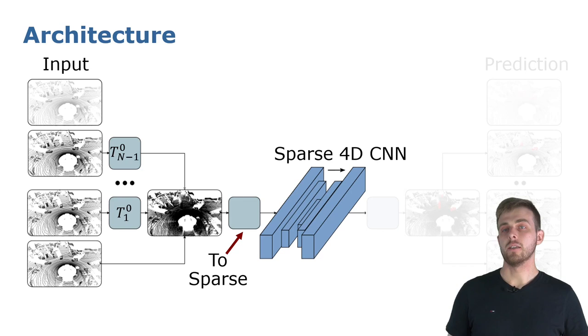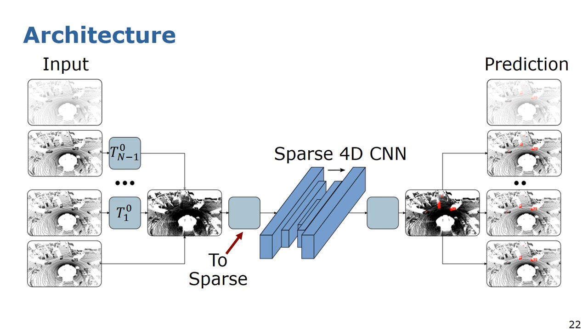This 4D point cloud is expressed as a sparse tensor and passed through a sparse 4D CNN. In our paper, we use the Minkowski engine for sparse convolutions. The output will be a confidence score for each point, indicating if it is moving or not.